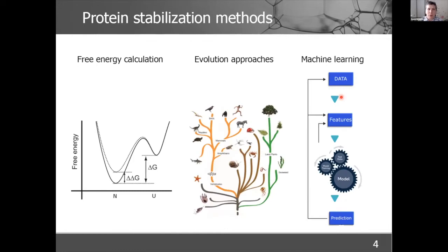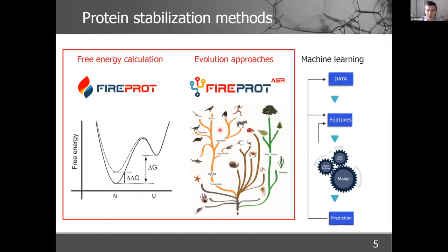Concerning methods of protein stabilization, we can divide them into three categories: first, calculating the folding free energy based on force fields; second, approaches based on evolution such as consensus designs or ancestral sequences; and third, machine learning-based approaches where you try to find statistical patterns in your data. I will focus mostly on the first two categories, for which we have developed web servers.